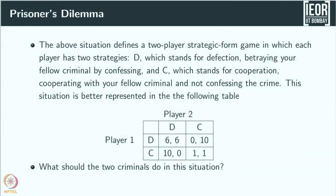This situation is a two-player strategic form game. There are two choices: D is for defection, meaning betraying your fellow criminal by confessing. C means cooperation — cooperating with your fellow criminal and not confessing the crime. This is represented as a two-by-two matrix game. When both players defect — both have confessed — the police has sufficient evidence against both.